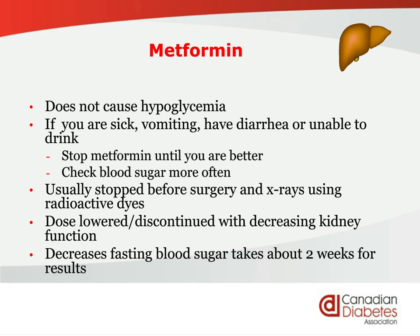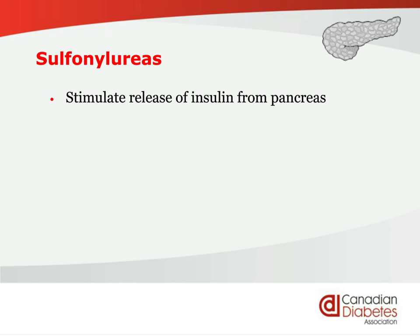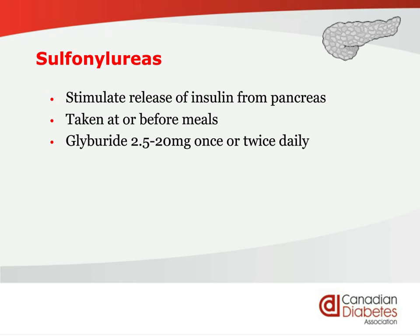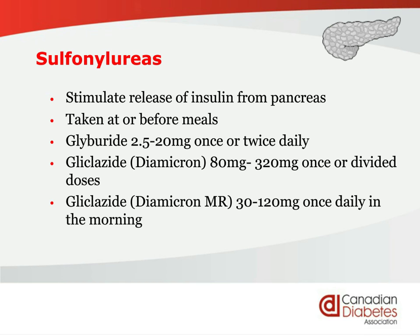The next class of medications are called sulfonylureas, and they work in the pancreas — like squeezing a sponge to release more insulin. They should be taken at or just before the meal. Glyburide is one of the most common, 2.5 to 20 milligrams once to twice daily. Glicazide, also known as Diamicron, comes in regular tablets dosed up to 320 milligrams, or in a long-acting form of 30 to 120 milligrams once a day in the morning. Glimepiride, also called Amaril, is once a day, 1 to 8 milligrams.